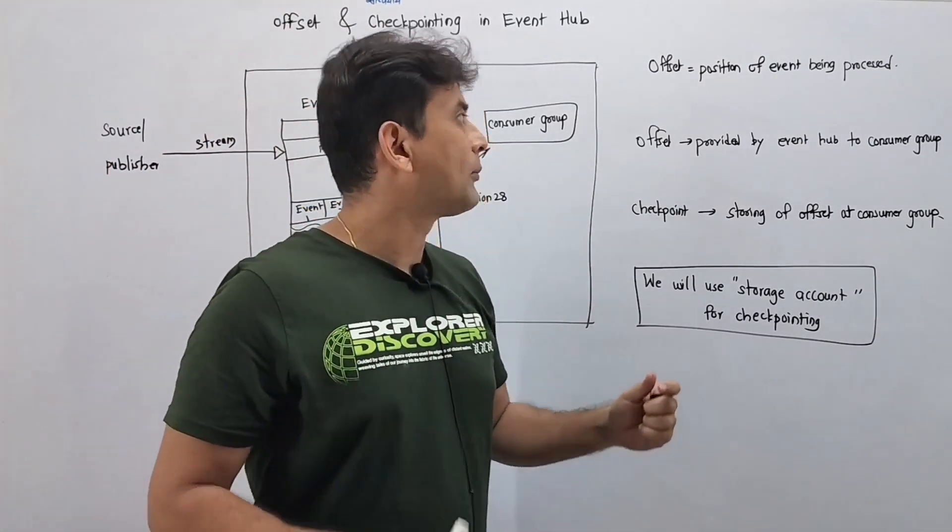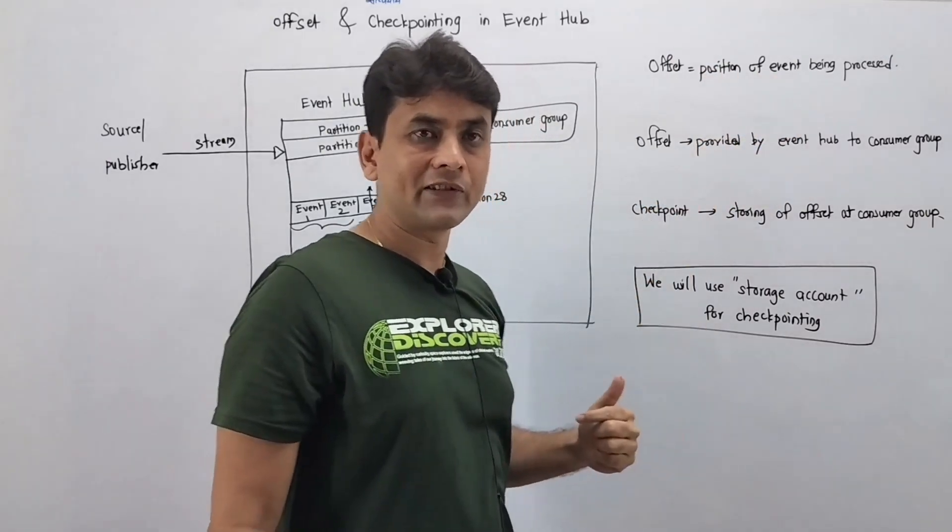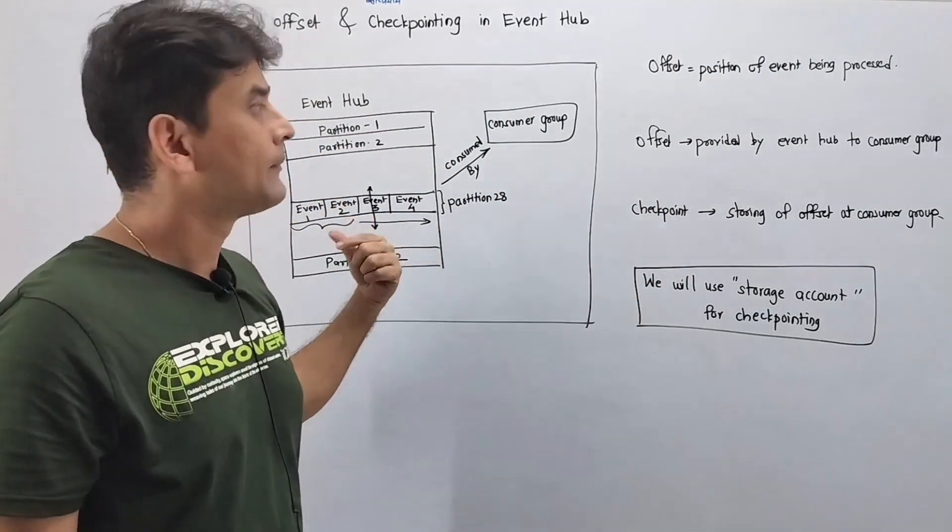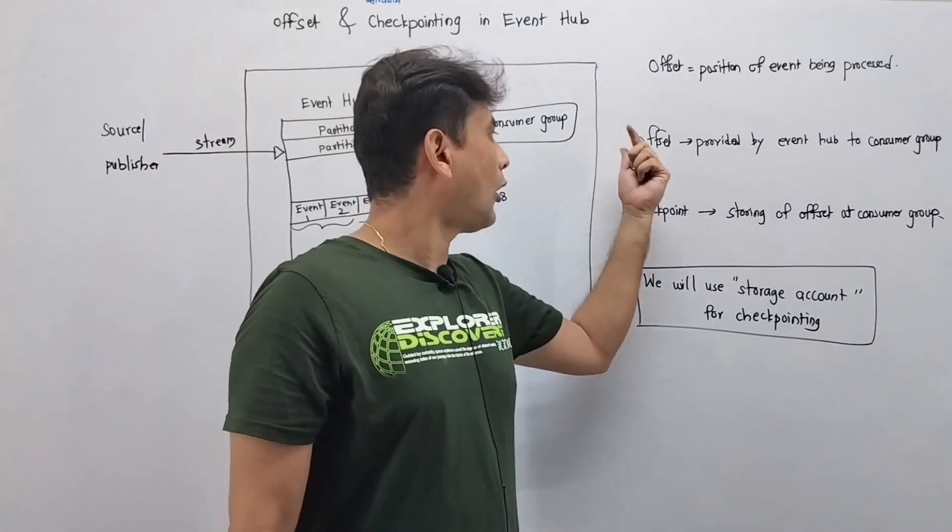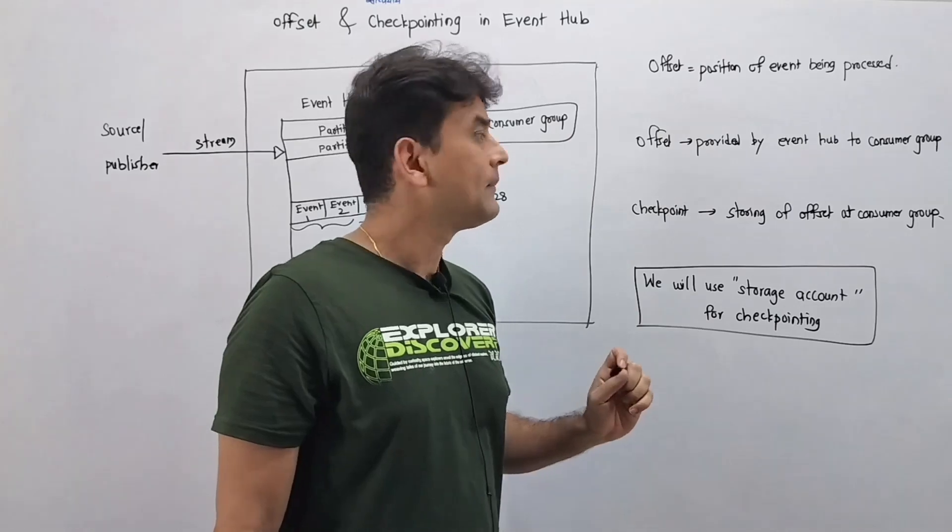Now what is this offset? Offset is a position of event which is being processed—so in this case it was event three. Offset is provided by the Event Hub to the consumer group.